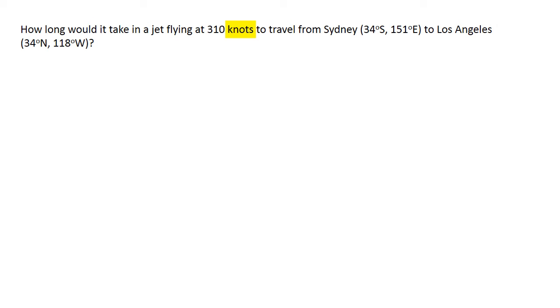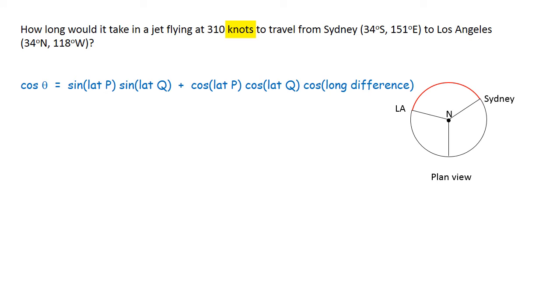We start with the formula. We know the latitudes and the longitude difference can be found with a diagram. Sydney is at 151 degrees east and Los Angeles is 118 degrees west. The angle that we need is marked in red. In this case it is found by adding together the two longitudes and subtracting them from 360 degrees. The longitude difference is 91 degrees.